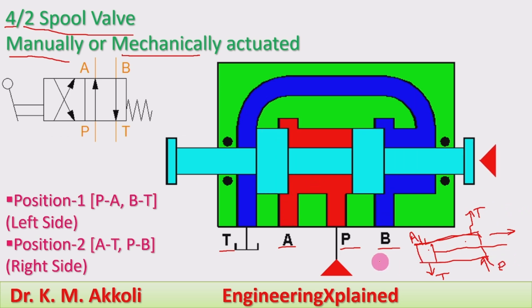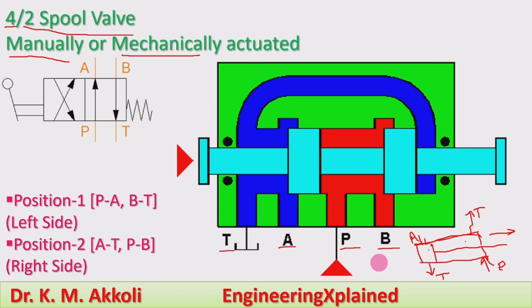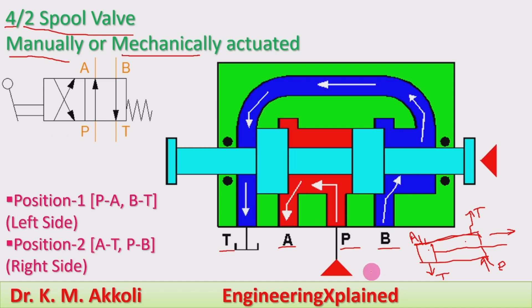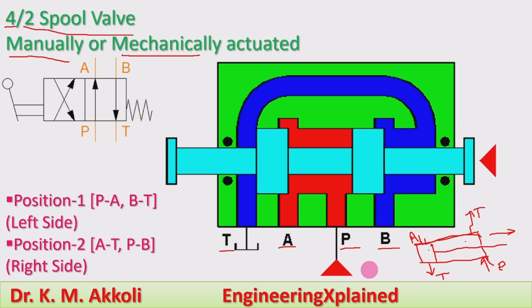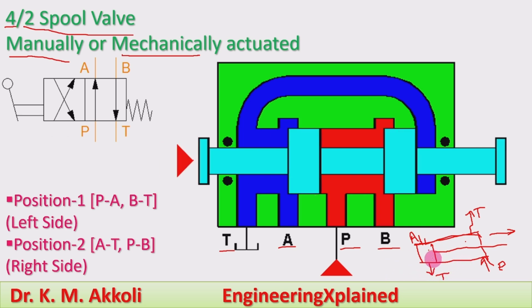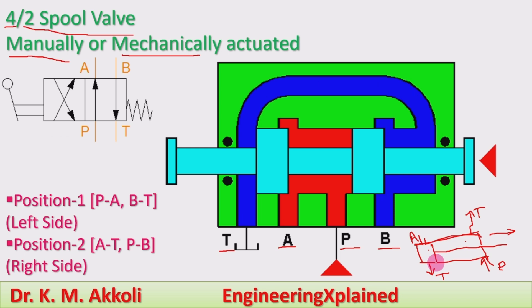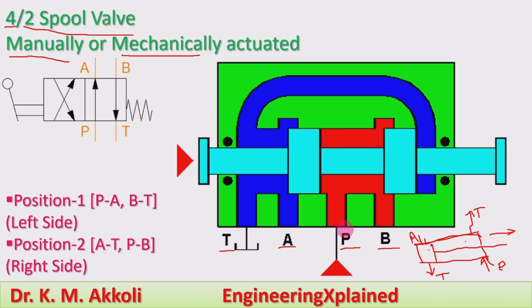This 4 by 2 spool valve is used for the working of the double acting cylinder, whereas the 3 by 2 spool valve is used for a single acting cylinder. With the double acting cylinder, both forward and return strokes are powered strokes.